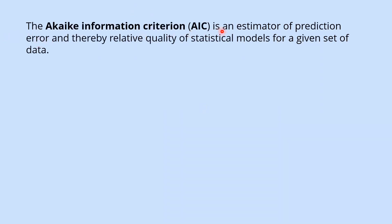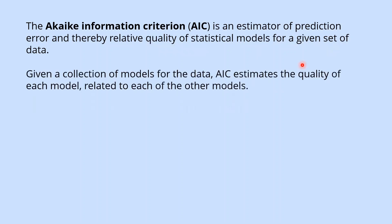The AIC is an estimator of prediction error and thereby relative quality of a statistical model for a given set of data. Given a collection of models for the data, AIC estimates the quality of each model related to each of the other models. Thus, AIC provides a means for model selection.